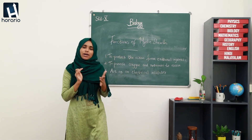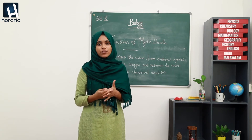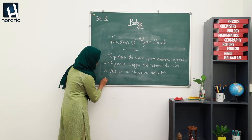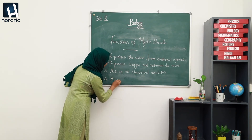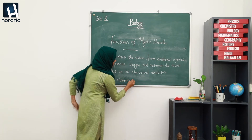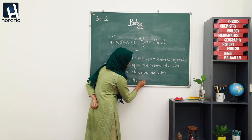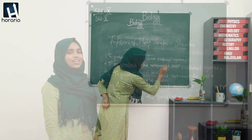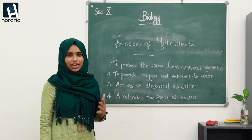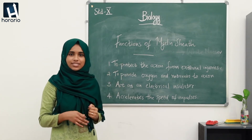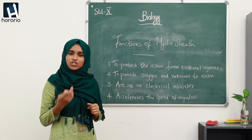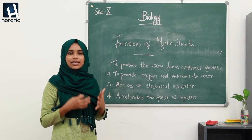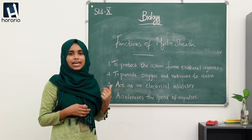Number four: myelin sheath can accelerate the speed of impulses. So these are the main functions of myelin sheath — they protect the axon from external injuries, provide enough oxygen and nutrients to the axon, act as an electrical insulator, and accelerate the speed of impulses.